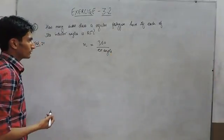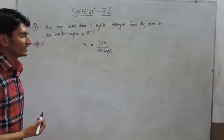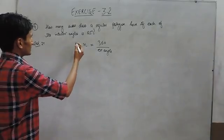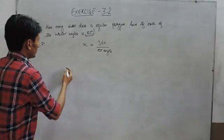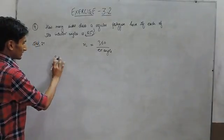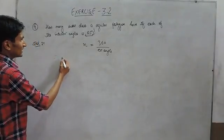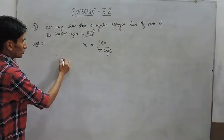You have to divide 360 by the exterior angle. In this case we are given the interior angle, and we know that the sum of interior plus exterior angle is equal to 180 degrees.